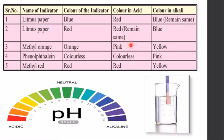Methyl orange is orange in color; if we add a drop to any solution and it turns pink, it is an acid, and if it turns yellow, it is an alkali or base. Phenolphthalein is colorless; when tested with acid it remains colorless, but when tested with base it turns pink. Methyl red is red in color; when tested with acid it remains red, but when tested with base it turns yellow.